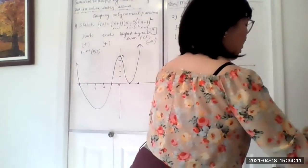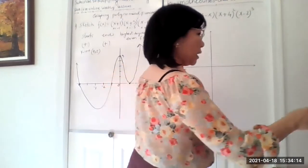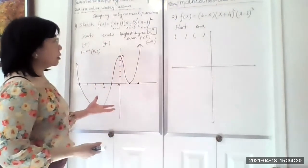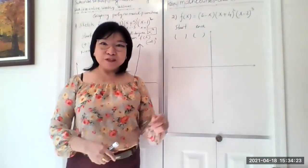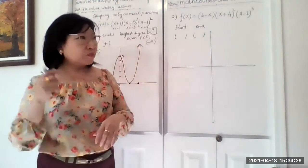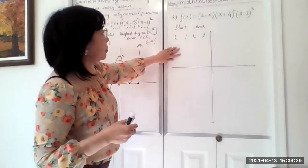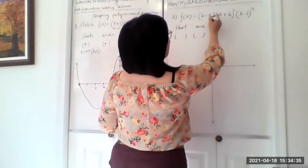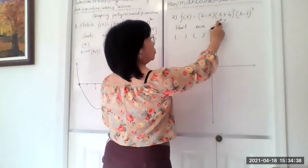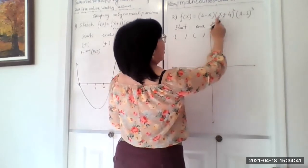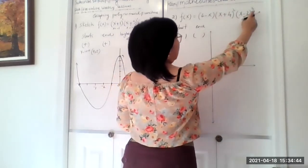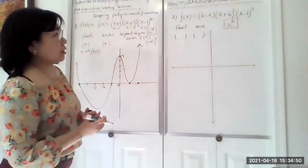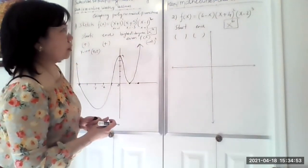Now I'm going to do the second sketch, going a little bit quicker since I've already explained the concepts. First, let's find the highest degree. We have x¹ × x¹ = x², times x² is x³, times x³ is x⁶. So we have a highest degree of x⁶, which is again an even function. So we know the direction at both ends will be exactly the same.